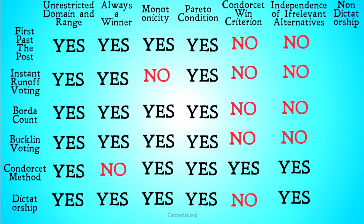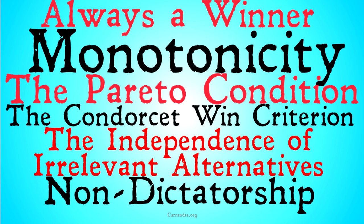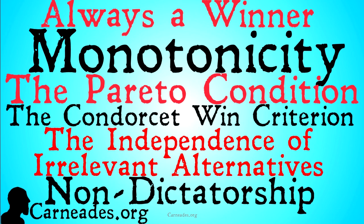Try saying that five times fast! So we note that more than half of our systems do not pass the Independence of Irrelevant Alternatives criterion. Only the Condorcet method and the dictatorship pass — and dictatorship right now is doing surprisingly better than most of our systems on these conditions, which might be a little frightening. But something tells me it's going to have trouble with the last condition, which is non-dictatorship — maybe begging the question a bit there. So our last condition is going to be non-dictatorship. Watch this video and more at carnades.org, and stay skeptical everybody.